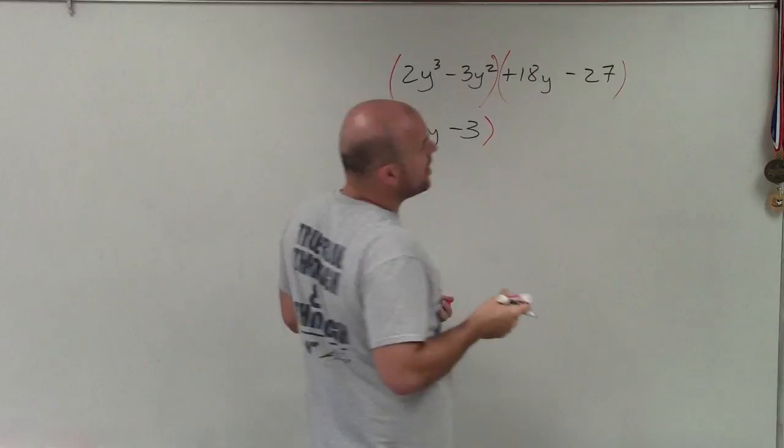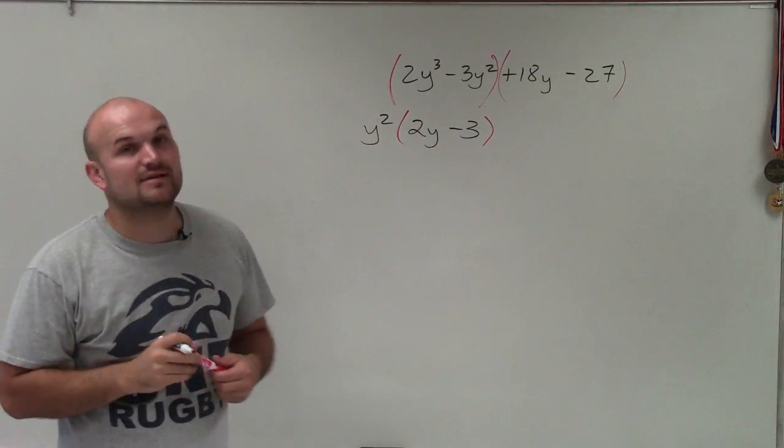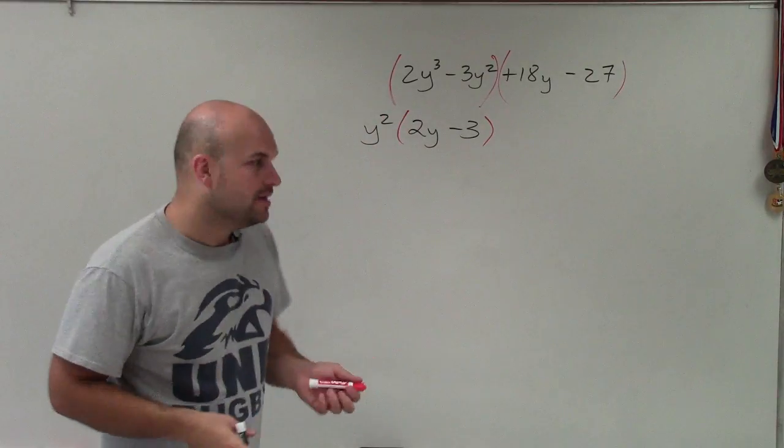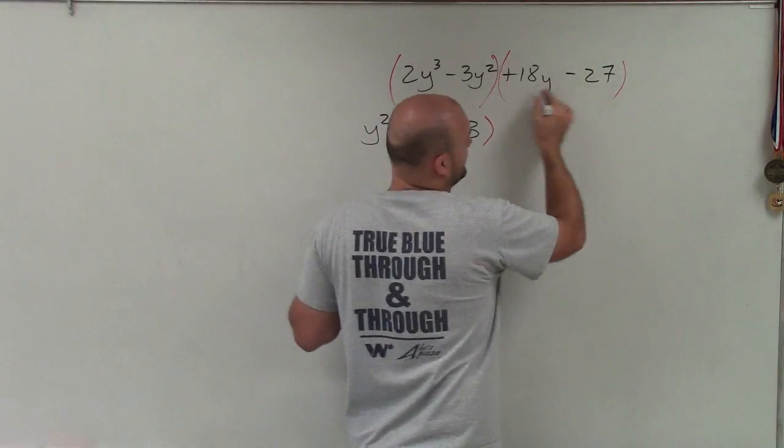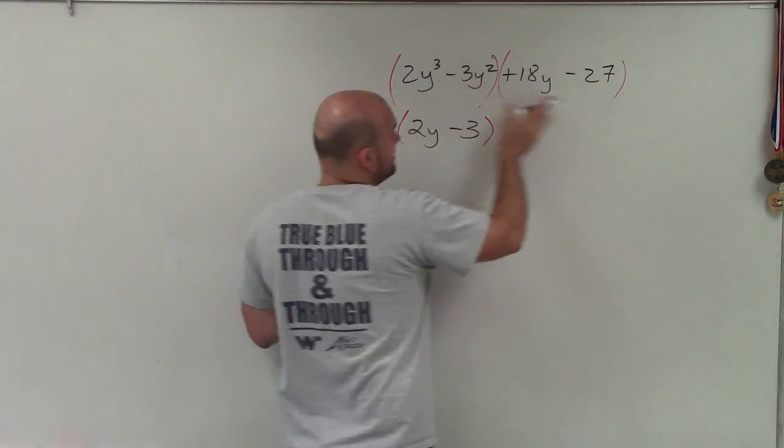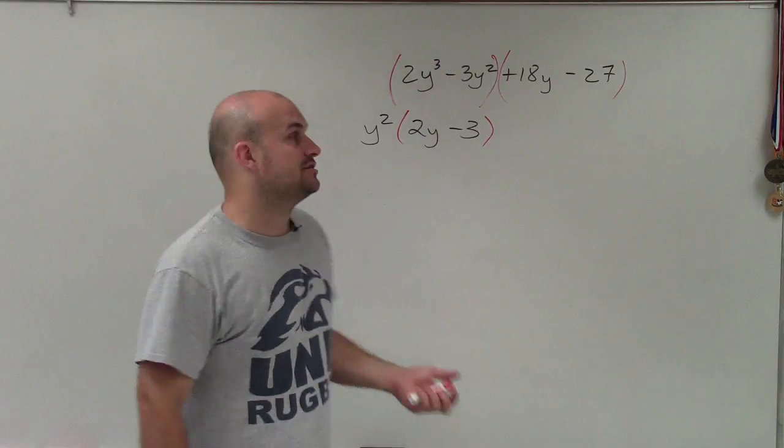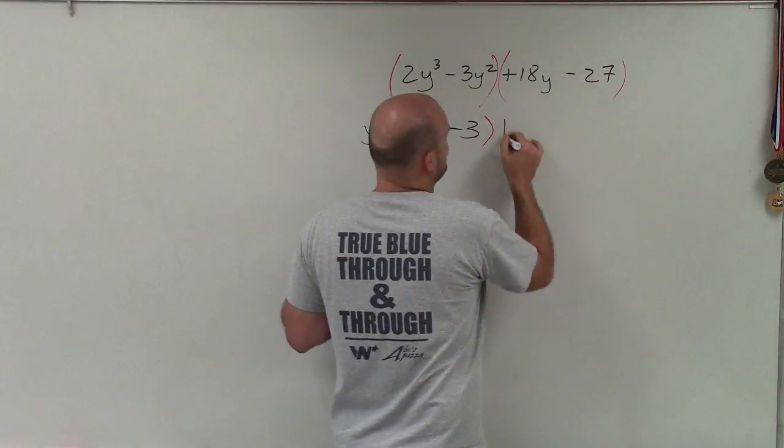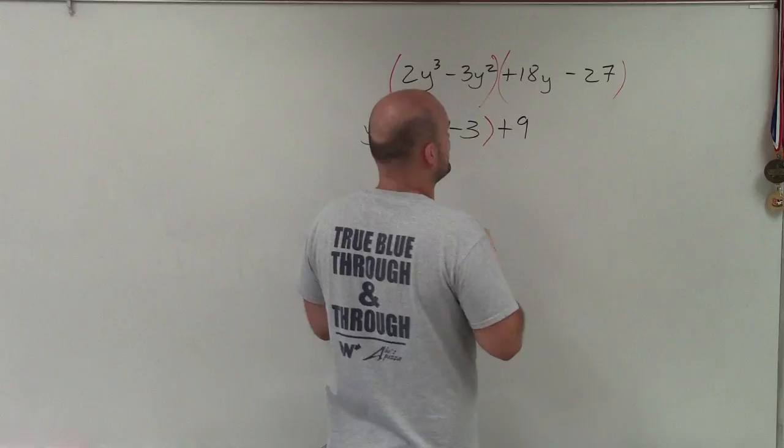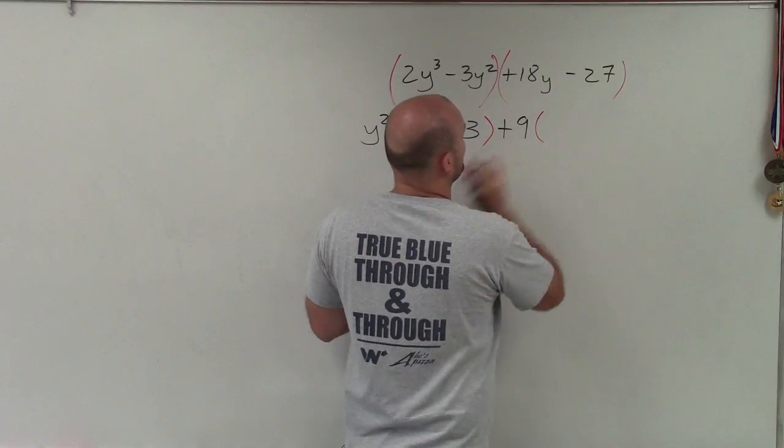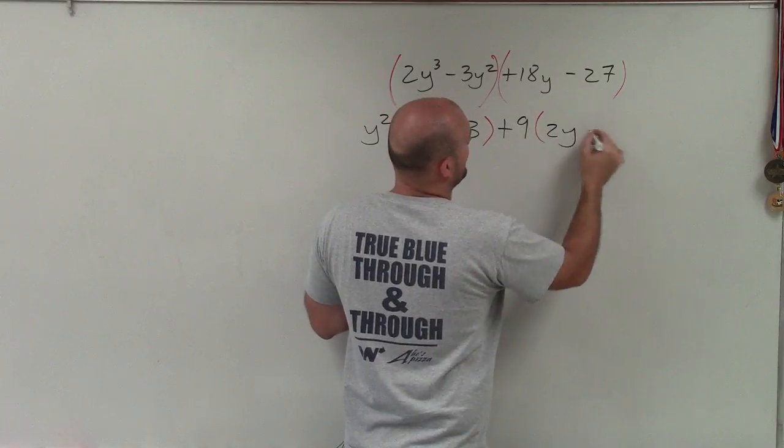Then I look at these two terms and I say, what is the common factor between 18y and negative 27? We look at the numbers. They don't both share a y like these two terms did, but the coefficient and the constant do have a common factor of 9. So I can factor out a positive 9, and when factoring out a positive 9, I'm left with 2y minus 3.